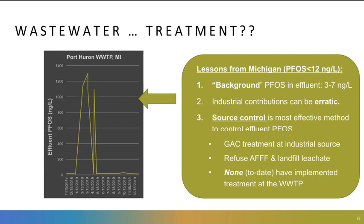The takeaway from the situation in Michigan is that source control is really the most effective method to control effluent PFOS. A number of plants that were successful implemented GAC treatment at the industrial source, not at the treatment plant — that's where you have a very concentrated but small stream that's much more effective to treat. Some plants have started refusing AFFF, that's the firefighting foam Julia talked about earlier, as well as landfill leachate, which is another known source of PFAS. It's important to note that none to date have actually implemented treatment at the wastewater treatment plant itself, which speaks to the challenges associated with doing that. It is possible that they will have to go to treatment at some point.